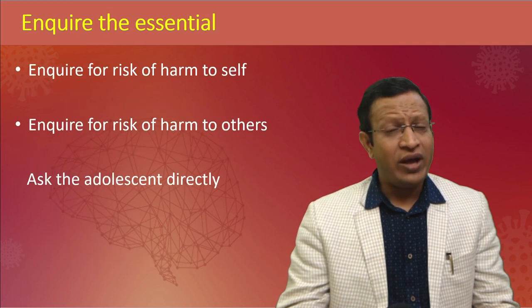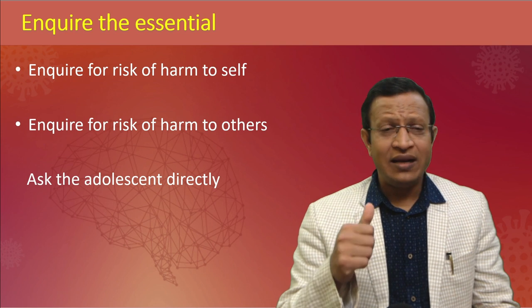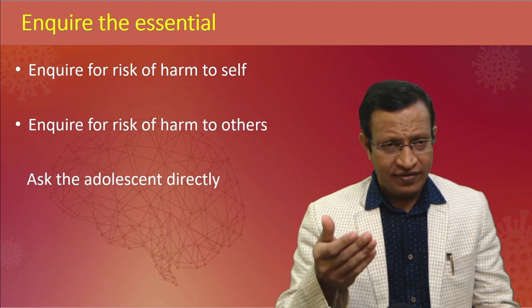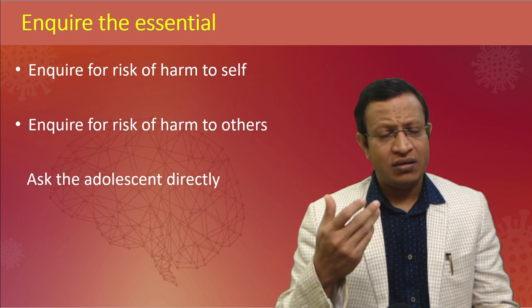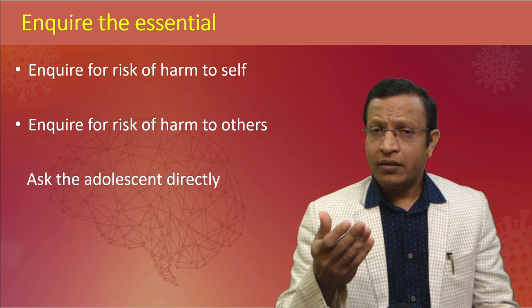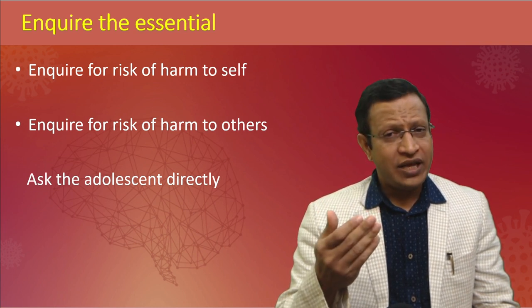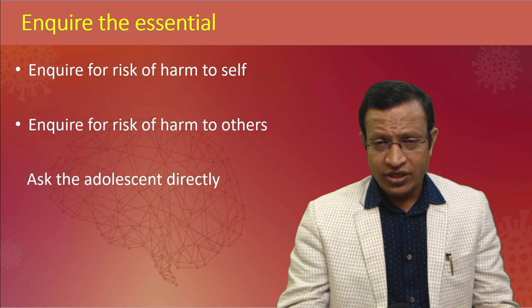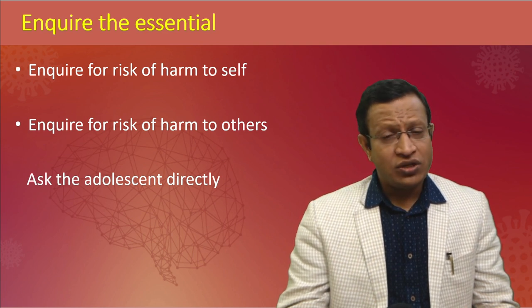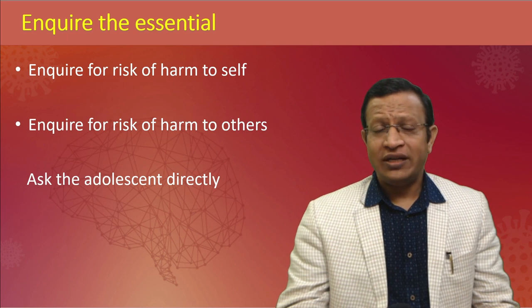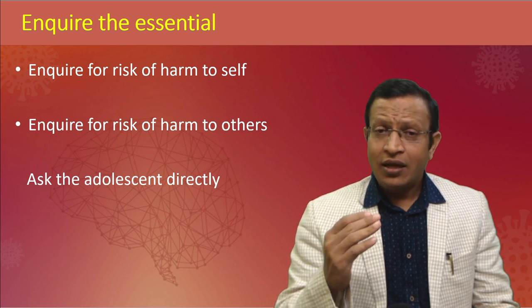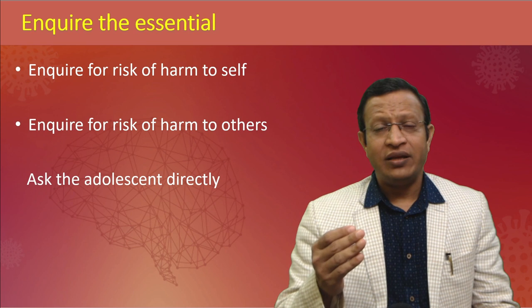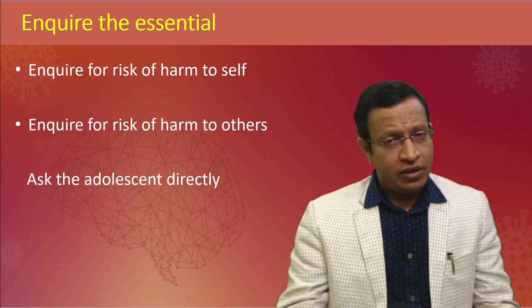Enquire about important safety points: whether the child is harmful to others or to self — suicidal, deliberate self-harm, or hurting siblings or friends at school. Ask the child directly whether they are suicidal, planning to end their life, or having death wishes. Direct questioning is very helpful. Research has proved that asking adolescents or children as young as 8 to 10 years directly does yield valuable information.